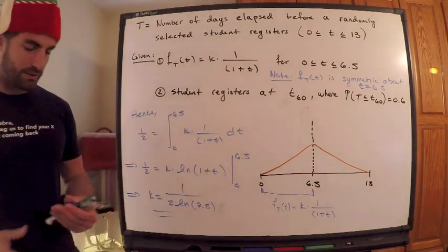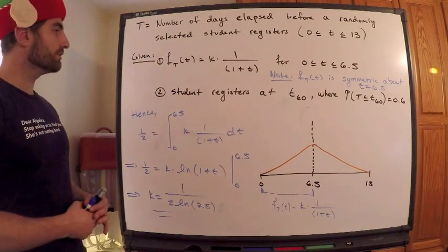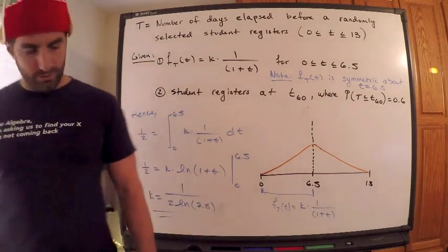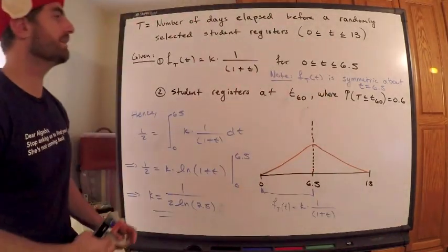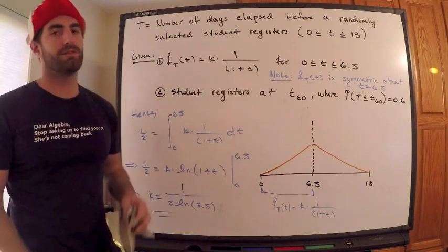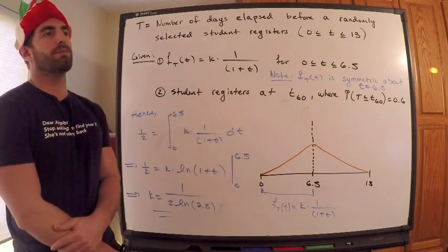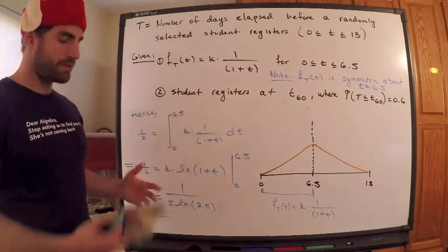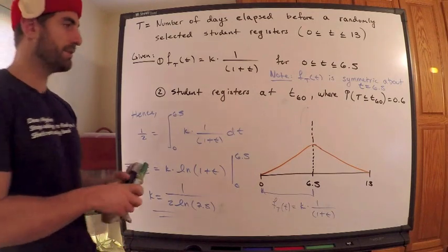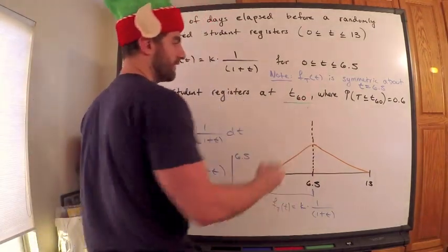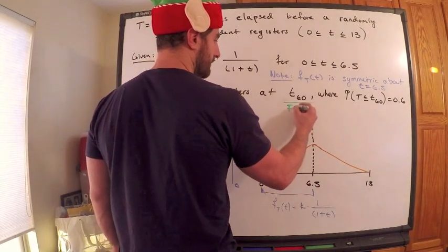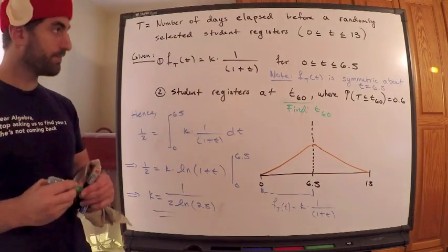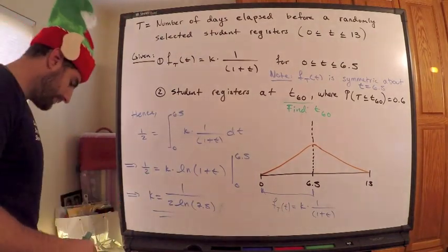All right, this is looking good. Let me give myself some more room. So now, we need to answer the question. What is the question, by the way? The question basically says, find the number of days that have elapsed for when the student registers. The student registers at the 60th percentile. So basically, what we're looking for is t sub 60. I should be thinking here, this is how many days have elapsed. So we need to find this. That's what we're looking for. Let's find that.